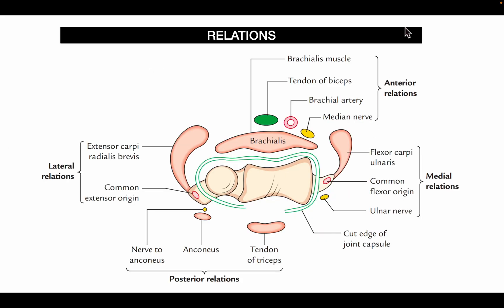Relations of the elbow joint: anteriorly — the brachialis muscle, tendon of the biceps, brachial artery, and median nerve. Medially — flexor carpi ulnaris, common flexor origin, and the ulnar nerve behind the medial epicondyle. Posteriorly — the anconeus muscle and tendon of triceps. Laterally — extensor carpi radialis brevis and common extensor origin.